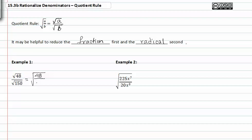Forty-eight and one-fifty have a common factor of six, so let's go ahead and reduce that fraction. Forty-eight divided by six is eight, and one-fifty divided by six is twenty-five.